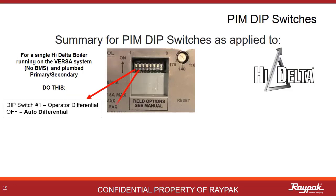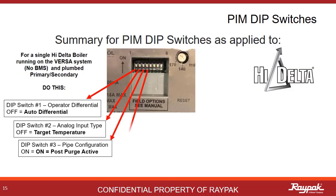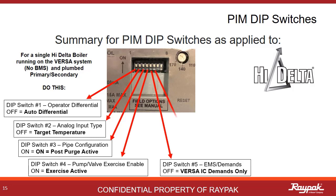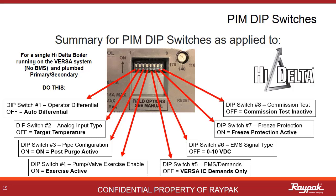Here is a summary for PIM dip switches on High Delta boilers. For a single boiler operating on the Versa system — not on a building management system — and plumbed properly with primary-secondary plumbing, turn on dip switches three, four, and seven. Leave the others off. This will enable the post purge feature, allow for pump exercise, and enable freeze protection. Again, turn on three, four, and seven.